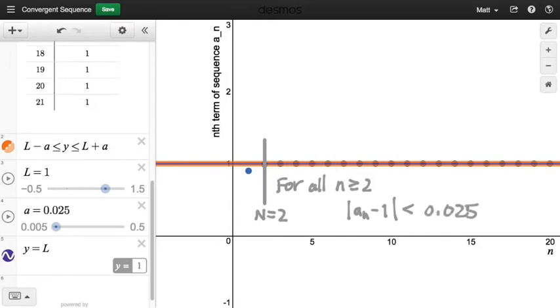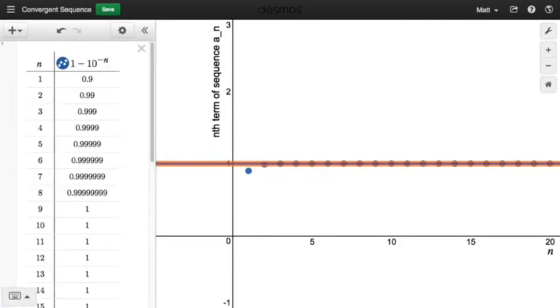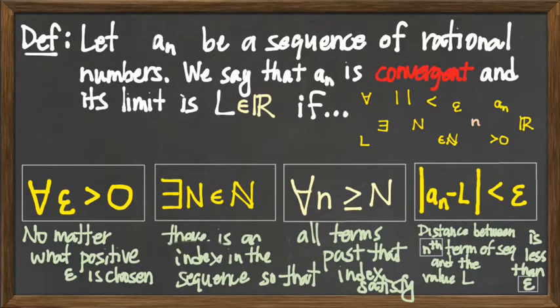And the smaller that we make this epsilon, probably the larger we have to make this capital N, the further out that we have to go before the sequence eventually goes into that strip and never leaves. So let's finish by actually using the formula, using the expression which we use to define every term of the sequence to structure a proof that this limit actually is equal to 1. So let's, for our 0.9 repeating sequence, use this definition to structure a proof that its limit actually is equal to 1, that it's a convergent sequence and that its limit is 1.